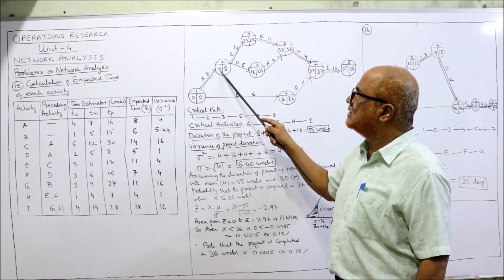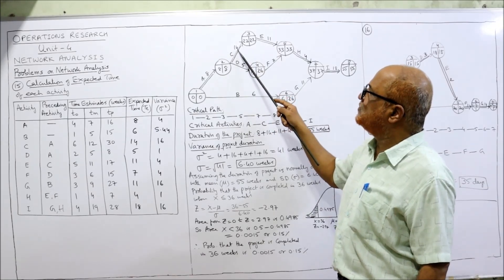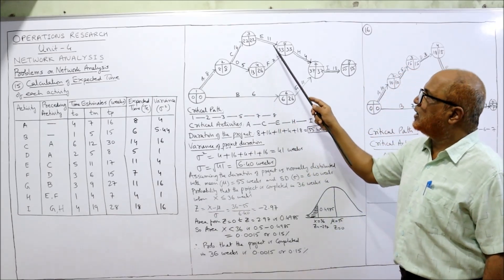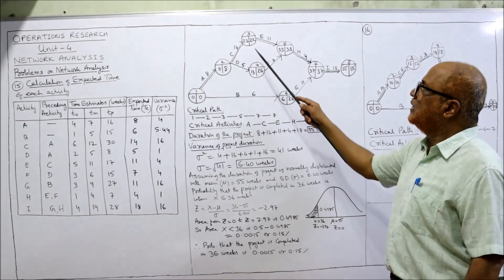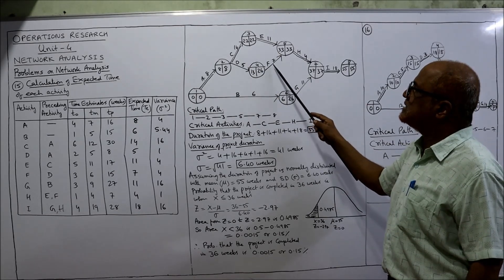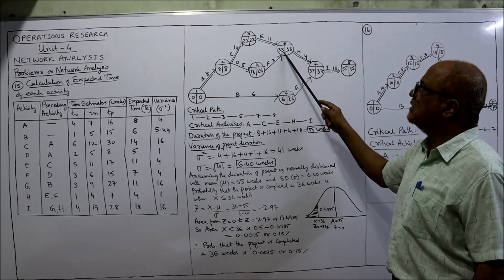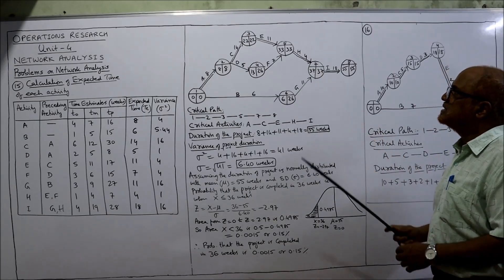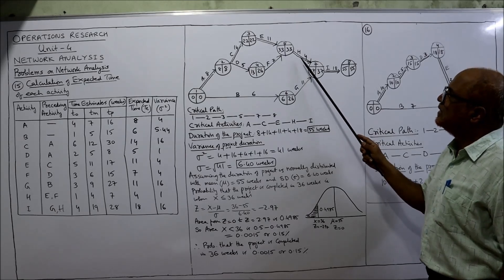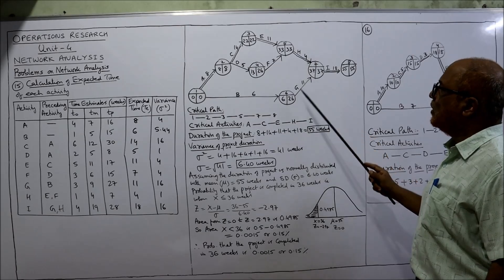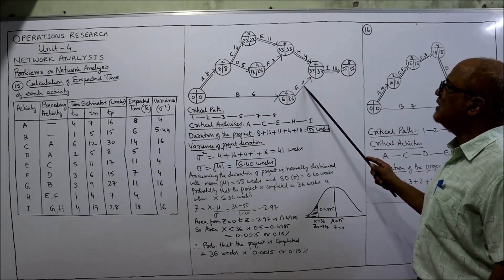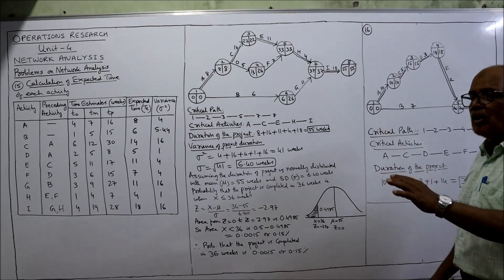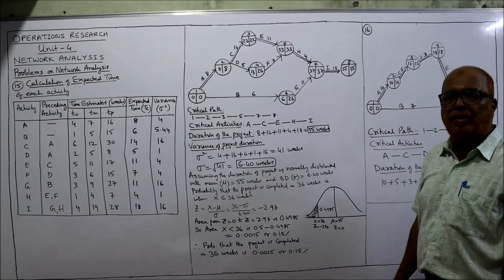Now we start the forward pass to calculate EST (Earliest Start Time). At event 1: start at 0. Only one arrow merging: 0 + 8 = 8. Next event: 8 + 14 = 22. Then: 8 + 5 = 13. Two arrows merging: take the maximum of (22 + 11 = 33) and (13 + 7 = 20) — 33 is higher. At event 6: 0 + 6 = 6. Two arrows merging: maximum of (33 + 4 = 37) and (6 + 11 = 17) — 37 is higher. Final event: 37 + 18 = 55. All EST values are now calculated.